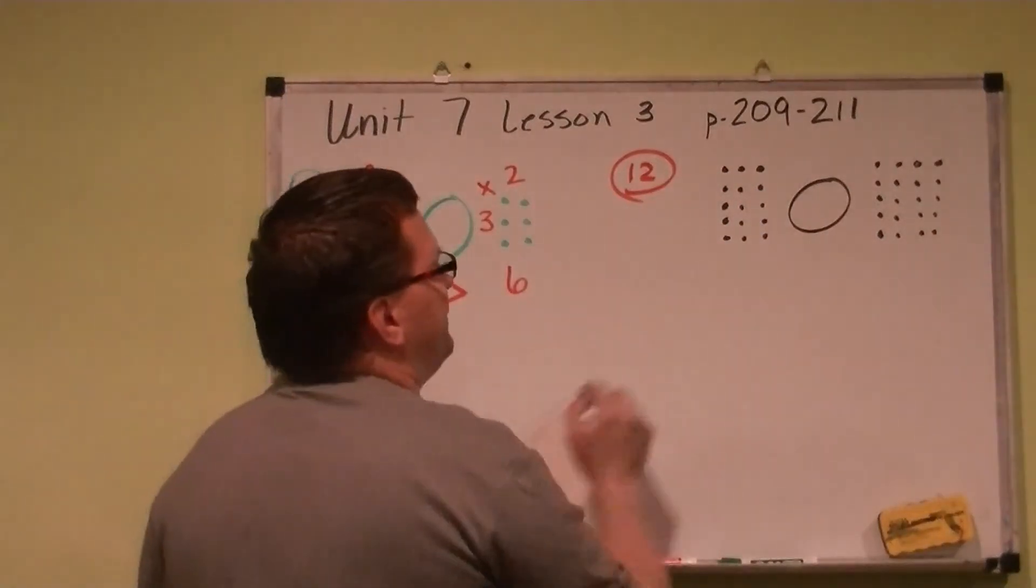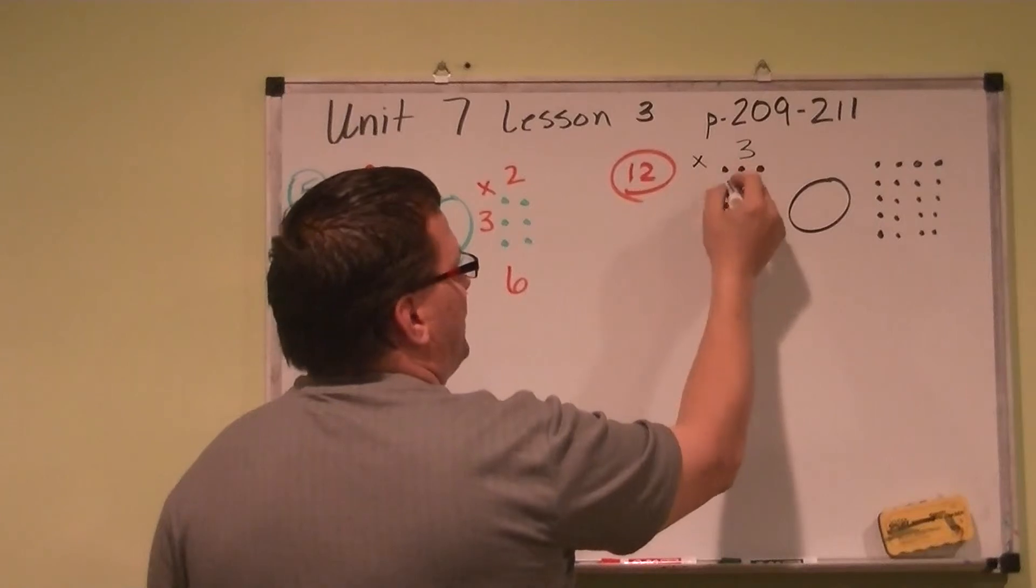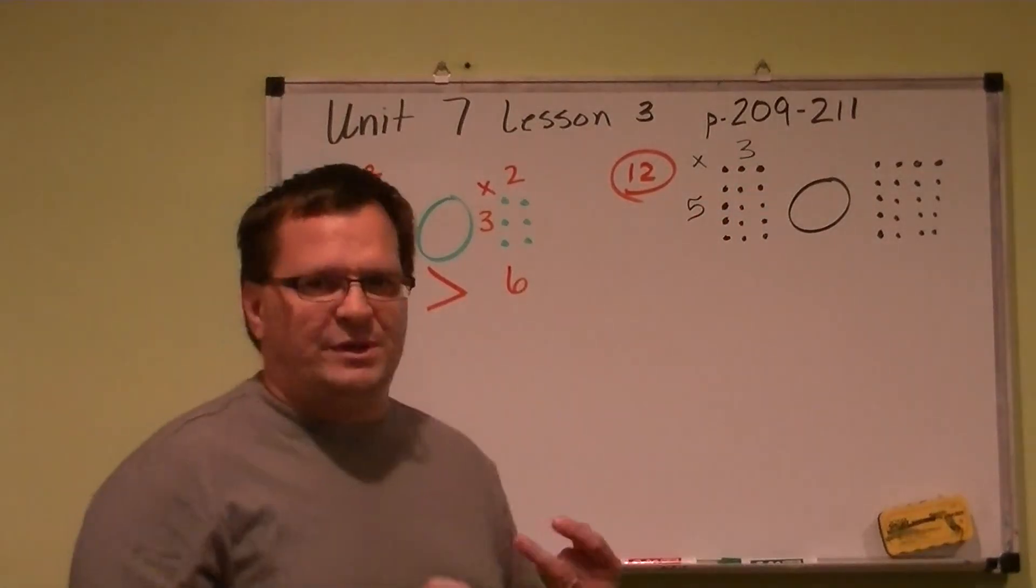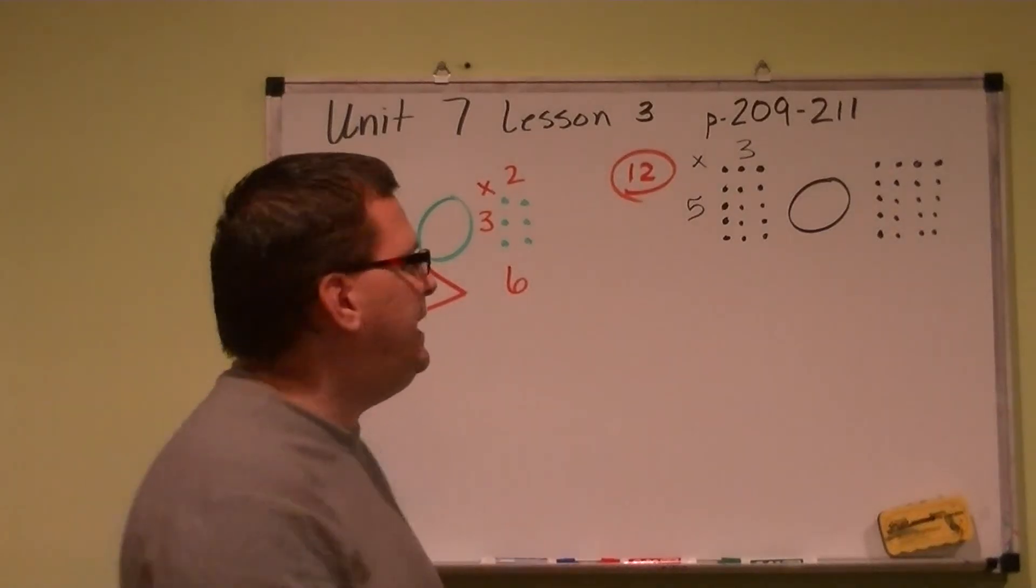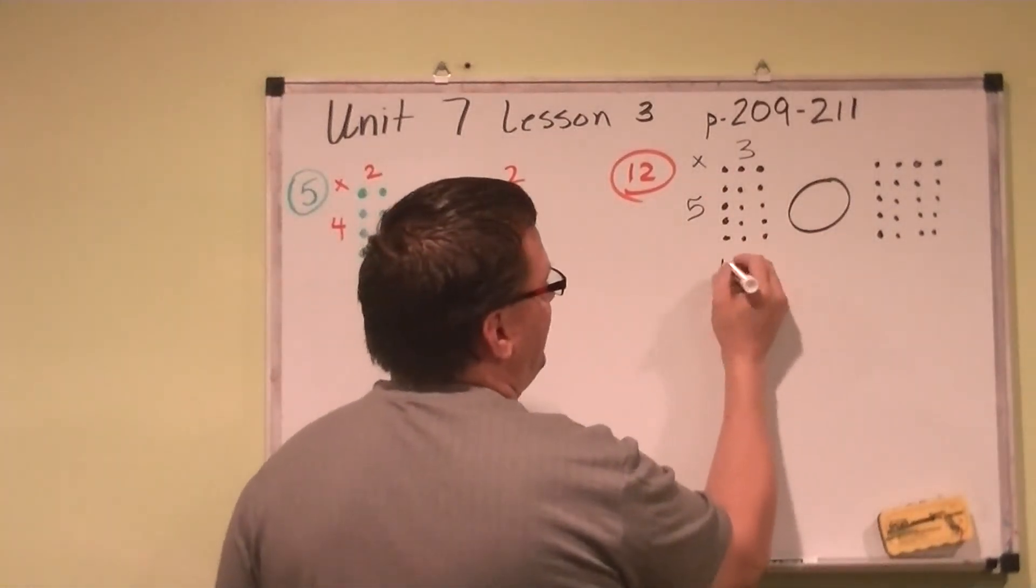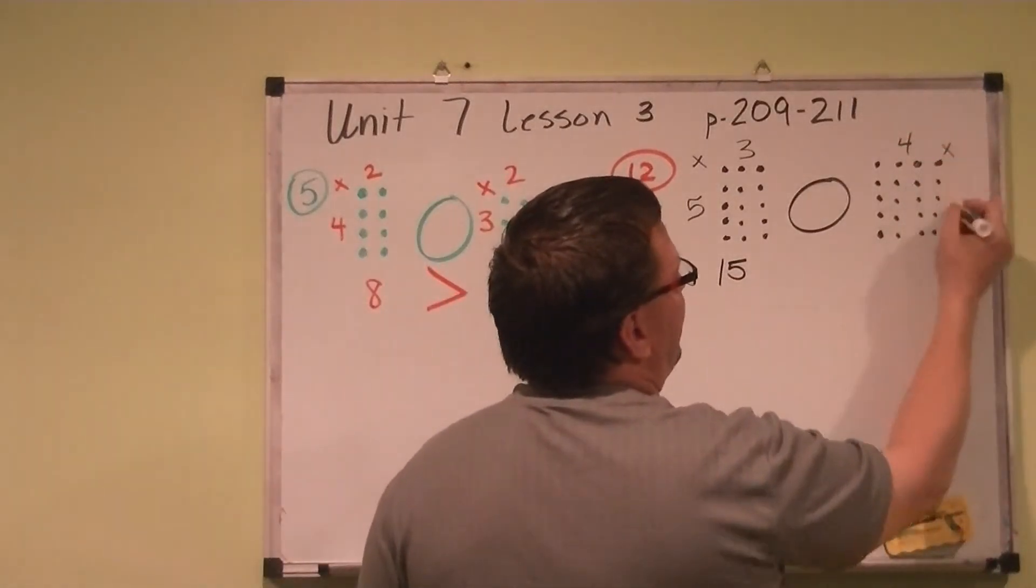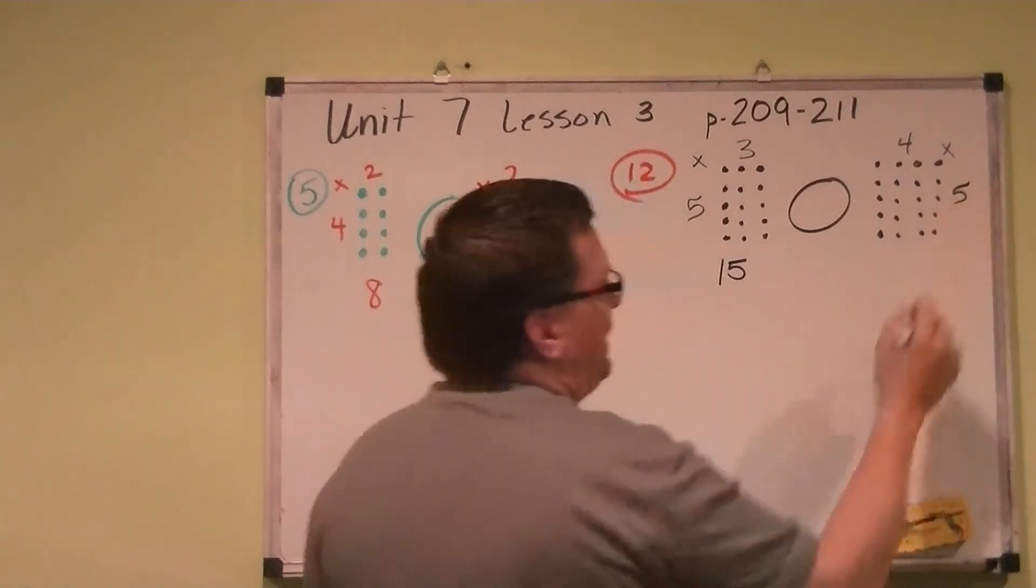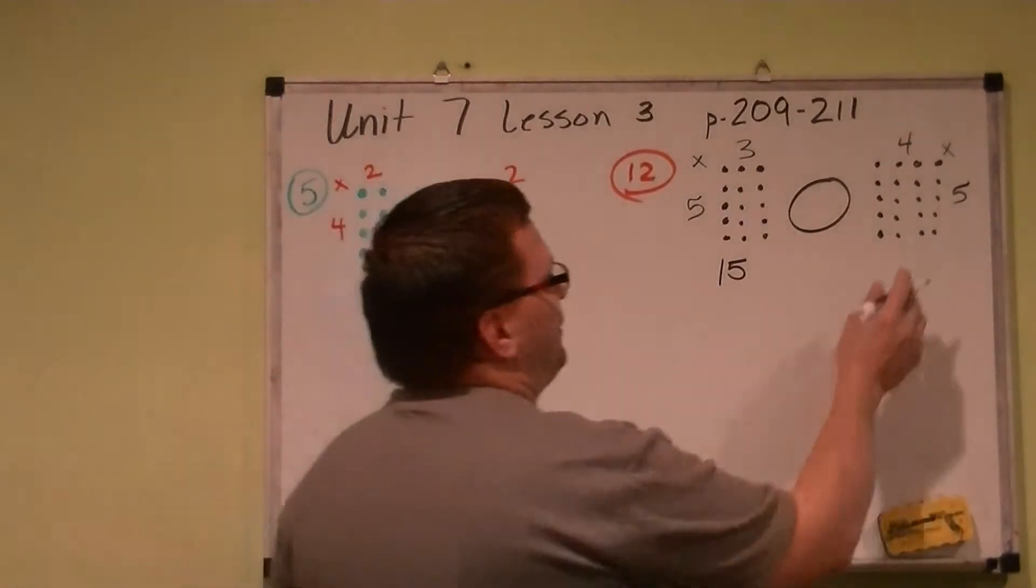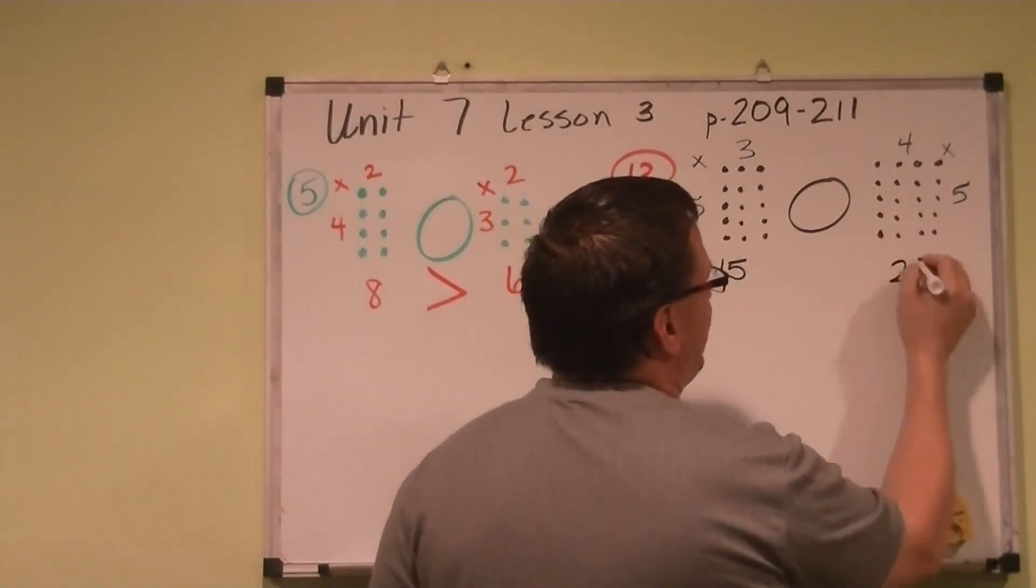And we're going to ask ourselves, we have, again, three up here, times one, two, three, four, five. We can do our fast five tricks as five, ten, fifteen. So three times five is going to give us a product of fifteen. And this one is four going across, times about five going down. Again, we can do our fast ones, five, ten, fifteen, twenty. So, of the factors, four times five is going to give us a product of twenty.